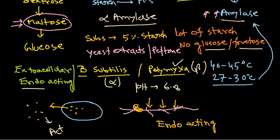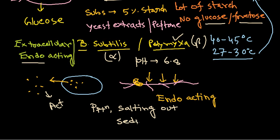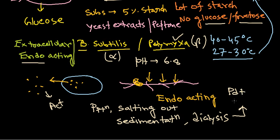Once amylase is produced, we remove the bacteria and extract the amylase using various processes. Since amylase is an enzyme and therefore a protein, we rely on techniques such as precipitation, salting out, sedimentation, and dialysis for product recovery. The recovered product is then dried and ground, making it ready for use.